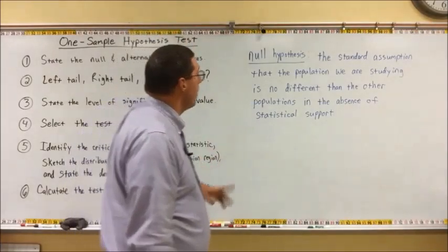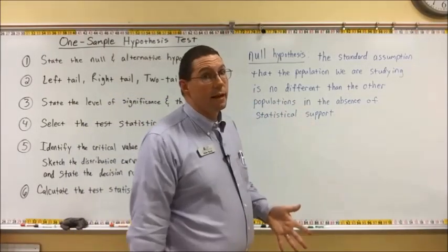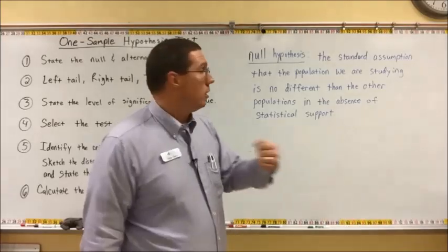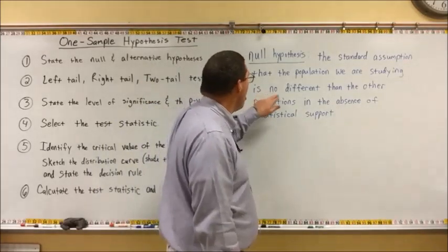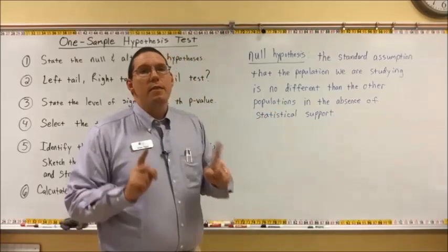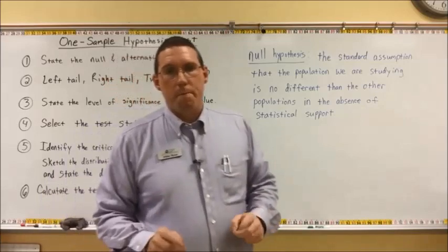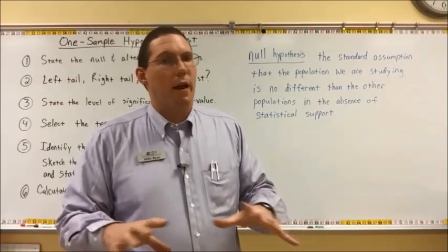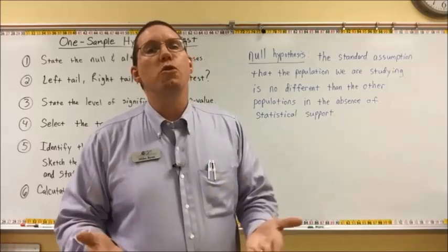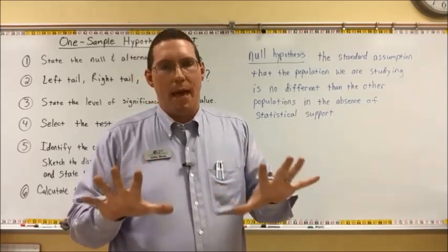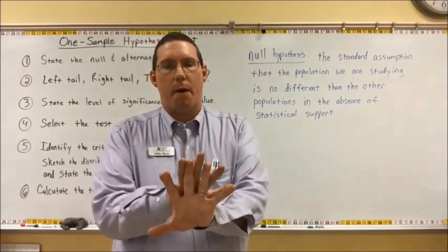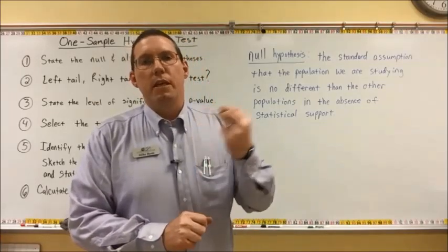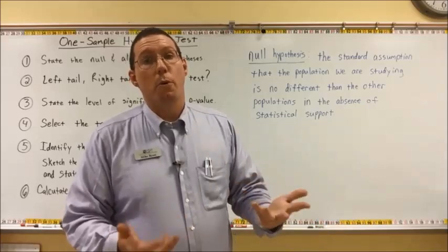A null hypothesis is the standard assumption that the population we are studying — for example, people taking the new medication — is no different than other populations in the absence of statistical support. Given that we don't have any statistical analysis, we are going to assume that two populations that may be different are actually the same population. We're going to assume they're the same population until we have a reason to believe otherwise, and we're going to need statistical evidence to show us that they are different.